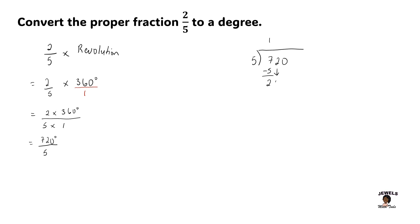We're going to bring down our 2, changing it into 22. 5 will go into 22 four times. 4 times 5 will give us 20. 22 minus 20 gives us a difference of 2.